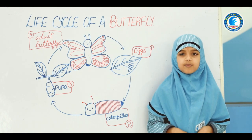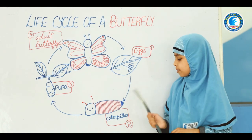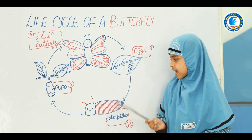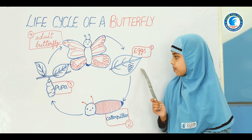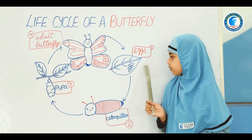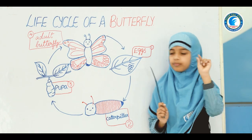In the very first stage, a female butterfly lays eggs on the side of a leaf. Those eggs are very small.